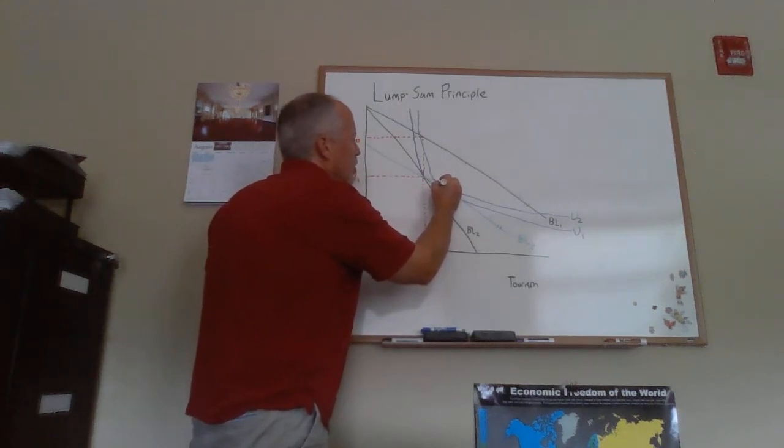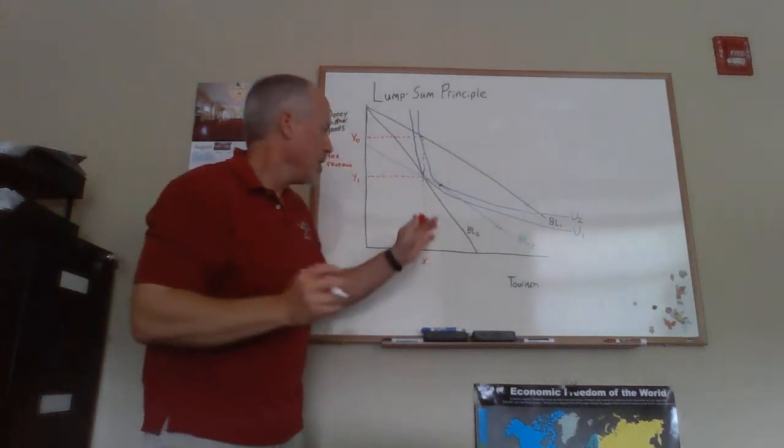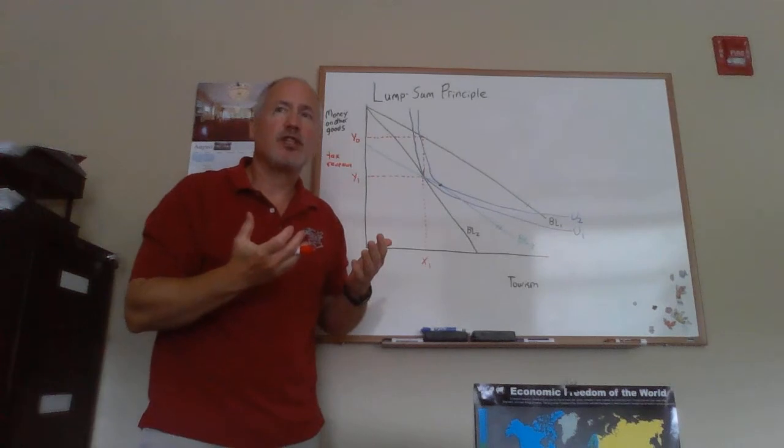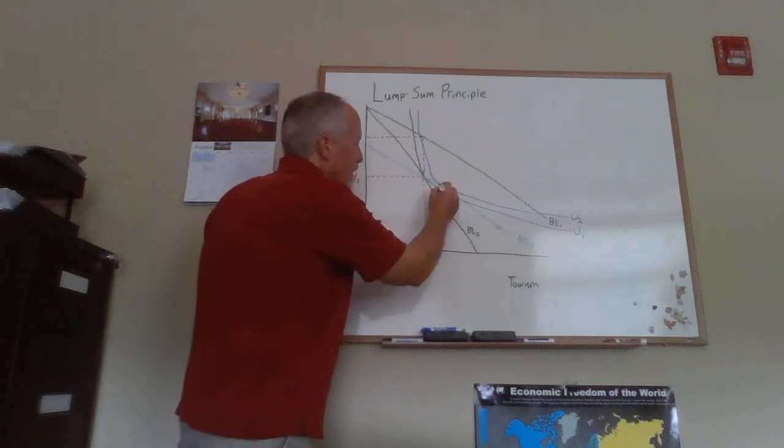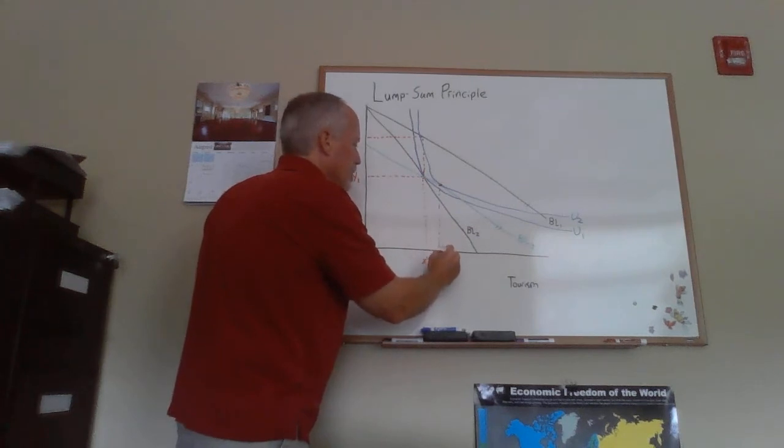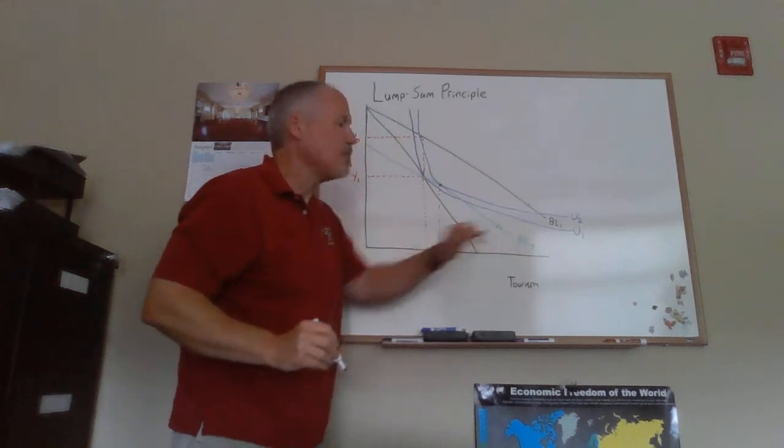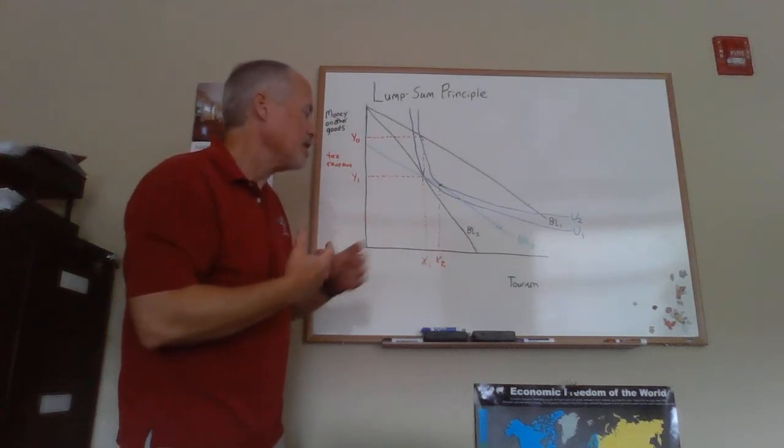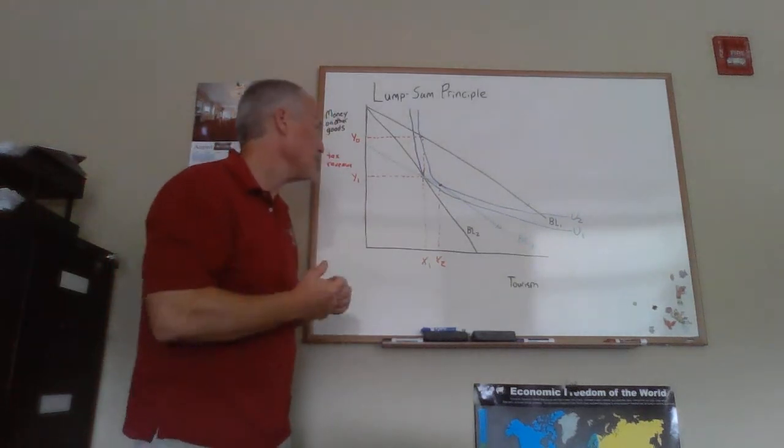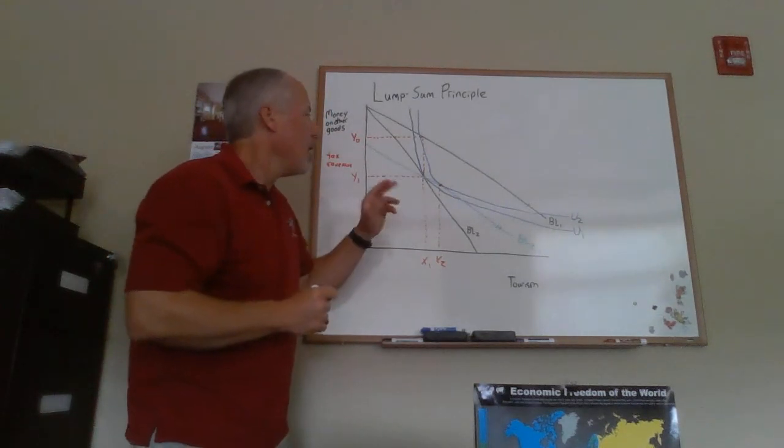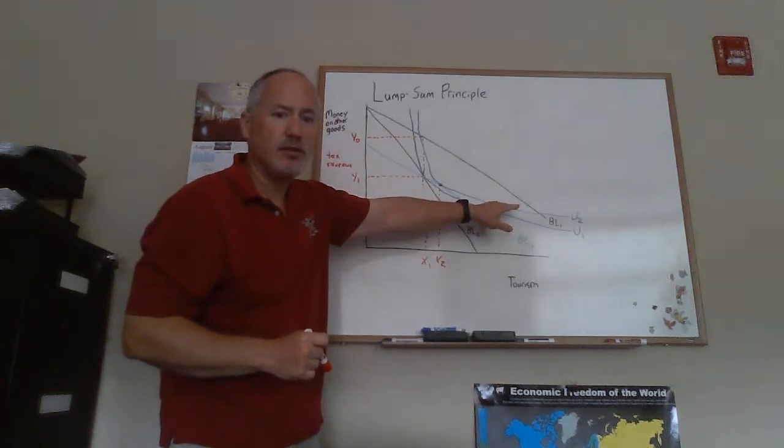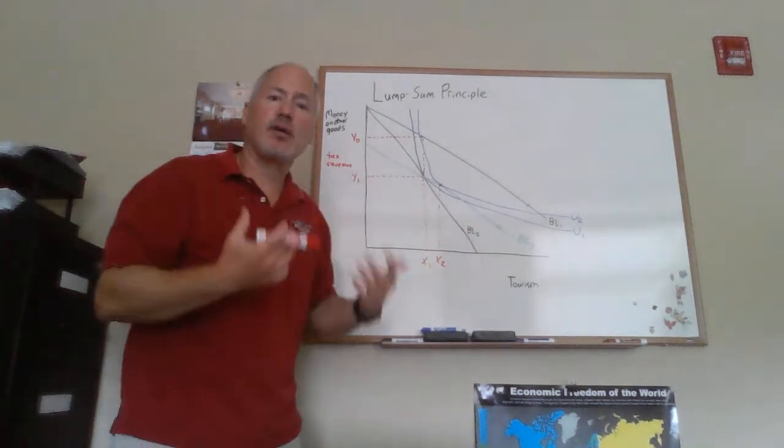That's going to give us U2, and we're going to have a tangency point here. Now the exact quantity of tourism and other goods that the person purchases here isn't all that important, though one thing we can note is that they would end up consuming more tourism with budget line BL3, that just takes the tax from their income as opposed to raising the price of tourism. That's a substitution effect, so we shouldn't be too surprised by that. But more importantly, with the budget line BL3, our consumer here will get to a higher utility indifference curve than they did with the commodity tax.